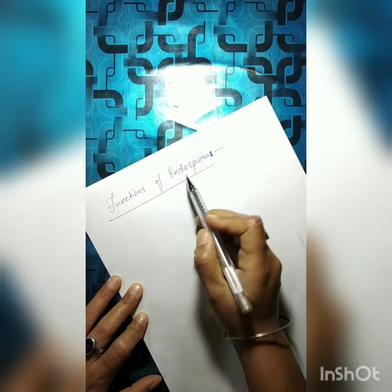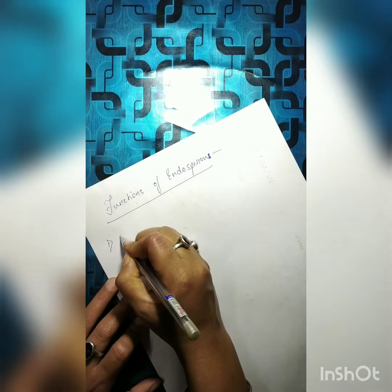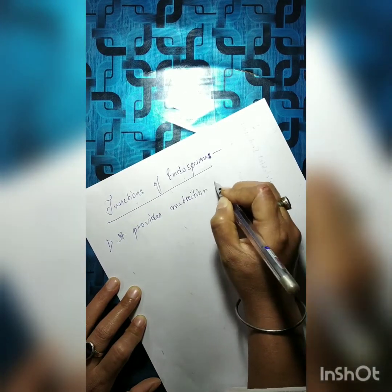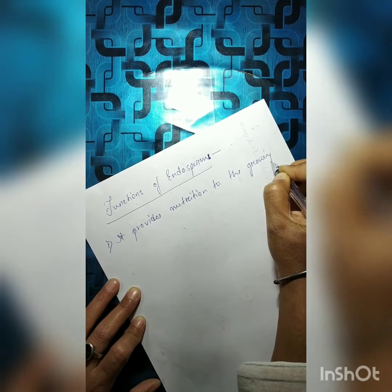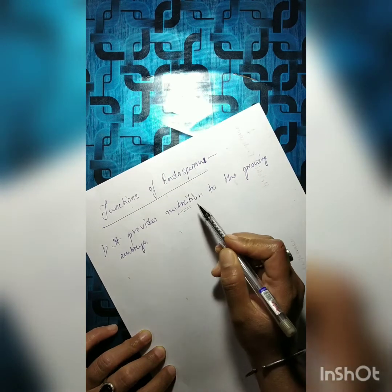Now let us talk about functions of endosperm. The first and most important function of endosperm is that it provides nutrition to the growing embryo — that means to our offspring as it develops. When we are germinating seeds, the developing seedling has no leaves to carry out photosynthesis and no roots to absorb water. So to grow and produce young leaves and roots, it will obtain nutrition from the endosperm.